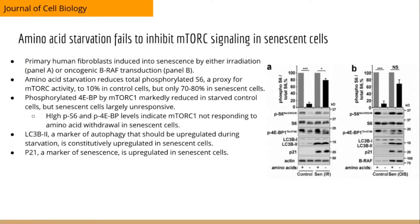To begin probing the mTORC signaling pathway, the researchers first established a senescent cell line in two ways. Primary human fibroblasts were either exposed to gamma radiation or transduced with BRAF, an oncogene that paradoxically causes cellular senescence. Both are standard, validated mechanisms of inducing senescence. After establishing these senescent cells, they were starved of amino acids — either amino acids were present or not — and they analyzed various signaling molecules involved in the mTORC pathway by Western blot.